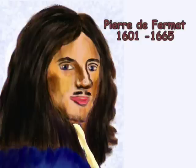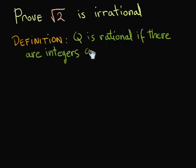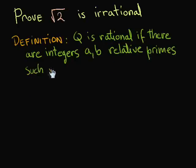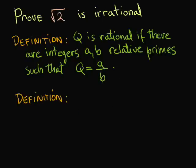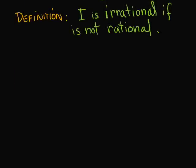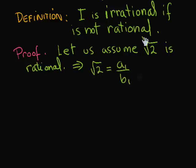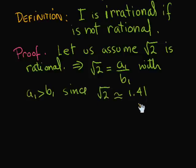Let us use this method of infinite descent to prove that the square root of 2 is irrational. A number q is considered rational if there exist a and b, relative primes, such that q equals a over b. A number is considered irrational if it is not rational — that is, if it cannot be written as a over b. Let us assume that the square root of 2 is rational. So we can write square root of 2 equal to a sub 1 over b sub 1, where a sub 1 and b sub 1 are positive integers with a sub 1 greater than b sub 1, since square root of 2 is approximately 1.41.